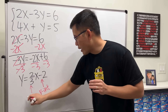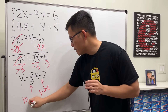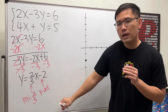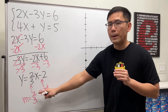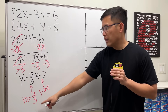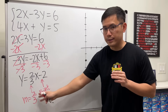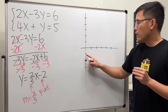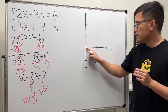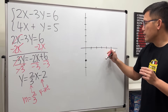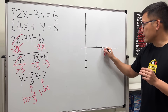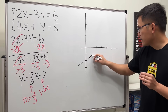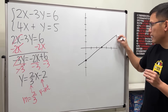The slope right here is 2 over 3. The positive 2 tells us that we go up 2, and the 3 tells us that we go to the right 3 times from the y-intercept. Up 2, and then to the right 3. So that's our second point. Now we can just connect the dots with a line.